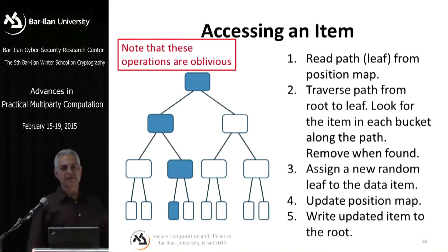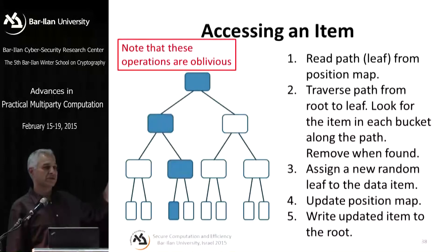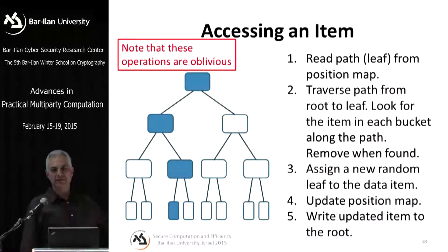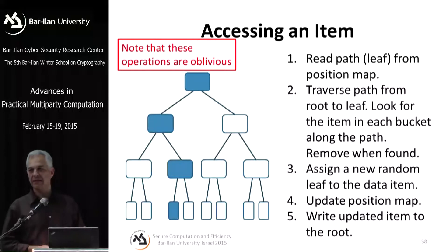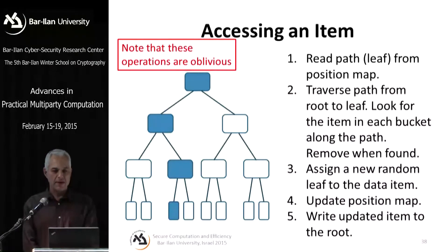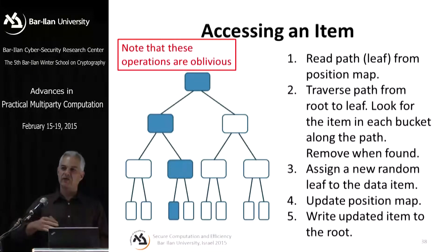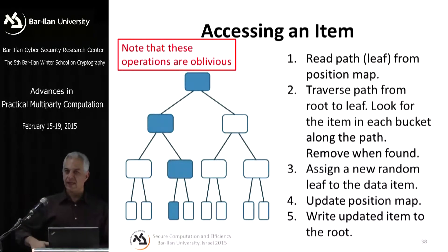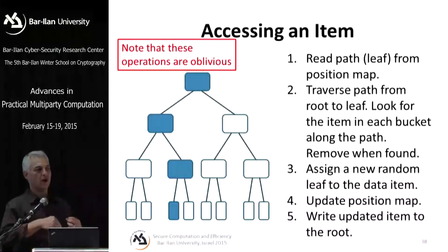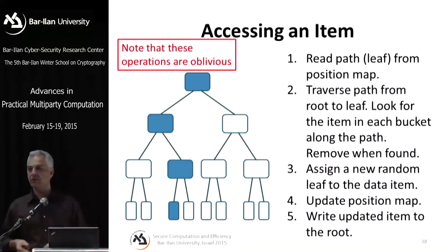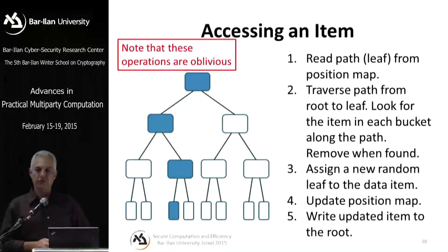There's an obvious problem: everything ends by writing to the root. The root has log n space, so after log n operations the root gets full. Instead of the structured approach of Goldreich-Ostrovsky, these schemes use a probabilistic approach — they pick random nodes whose contents get moved to lower levels and hope that if the math and probabilities work out, there's always enough room at the root.